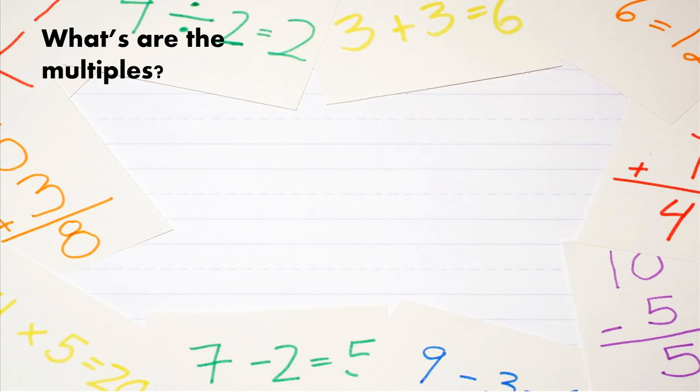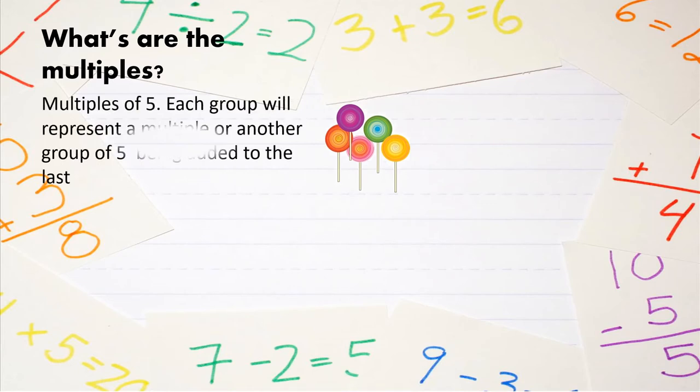What are the multiples? So in this case, we have a multiple of five. So multiples of five for each group will represent a multiple or a product or another group of five being added from the last or to the last. So we're going to have multiples of five for each group of lollipops. So if we have five, we added that to zero. And now we have one group of five.